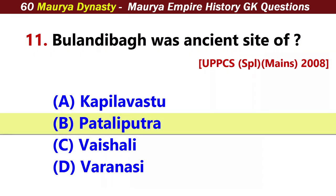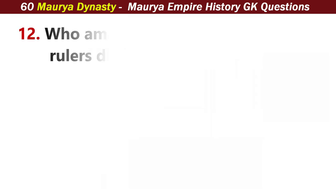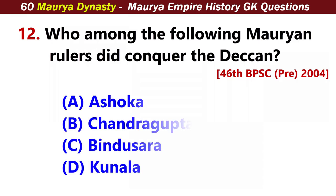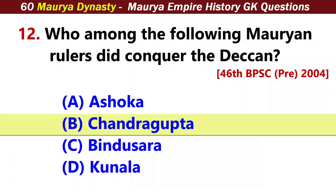Pataliputra. Who among the following Mauryan rulers did conquer the Deccan? Answer B: Chandragupta.